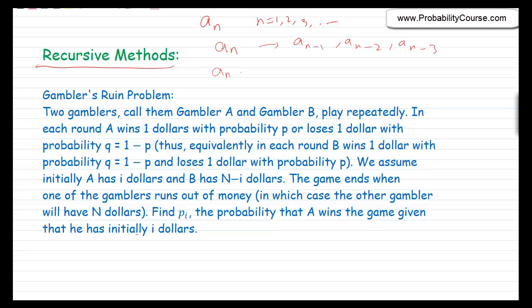For example, I might find that a_n equals a_{n-1} plus 2·a_{n-2}. Now, if I know a_0 and a_1, from these two I can calculate a_2, and from a_1 and a_2 I can calculate a_3, and so on. That's the basic idea, and there are many situations in probability and combinatorics where we can solve problems using recursive methods. Today we want to talk about one of these problems — a very famous problem called the gambler's ruin problem.